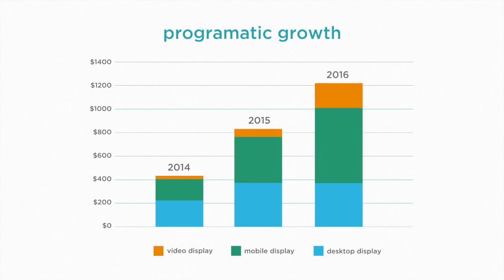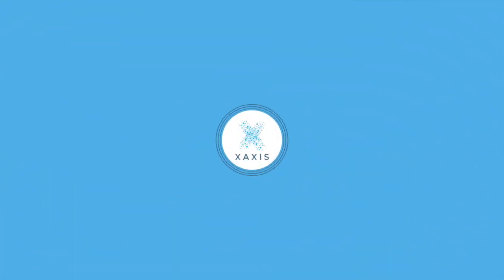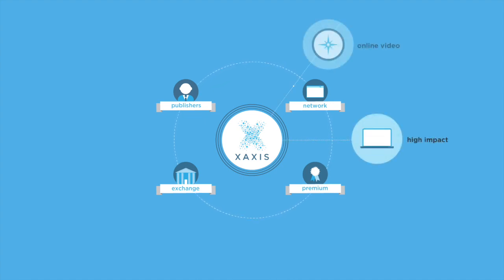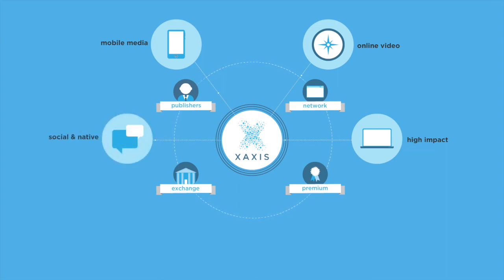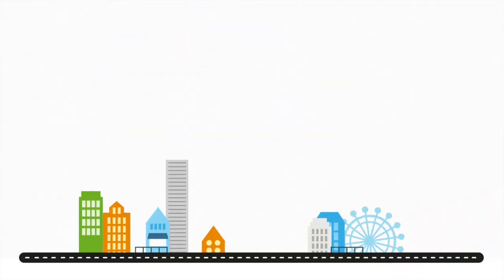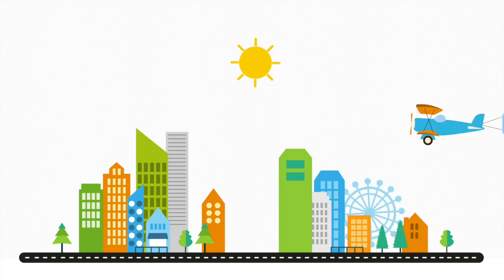Programmatic's explosive growth is more than just budgetary. The entire spectrum of digital media can be bought programmatically — from premium inventory like high-impact units on prestige publishers, to online video bought on an audience or TV extension basis, to mobile media, social and native advertising, digital radio, digital out-of-home, and even addressable television.